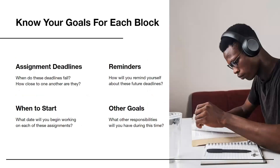Knowing that the semester can be broken up into these four significant blocks, you want to — at the beginning of the semester — work on knowing your goals for each block. The first set of goals to focus on are your assignment deadlines. Make sure you're looking at your syllabi and knowing when your major deadlines fall and how close to one another they are. Having a sense of when your periods of heavy work begin and end will help you plan for the semester as a whole better.